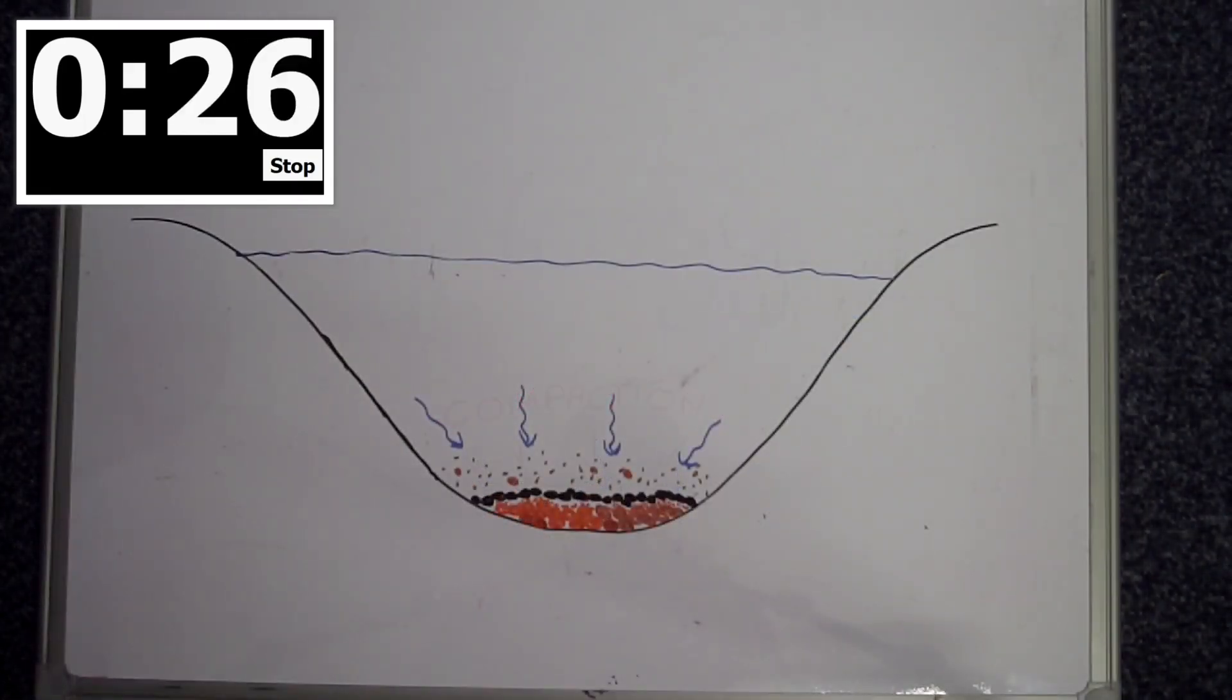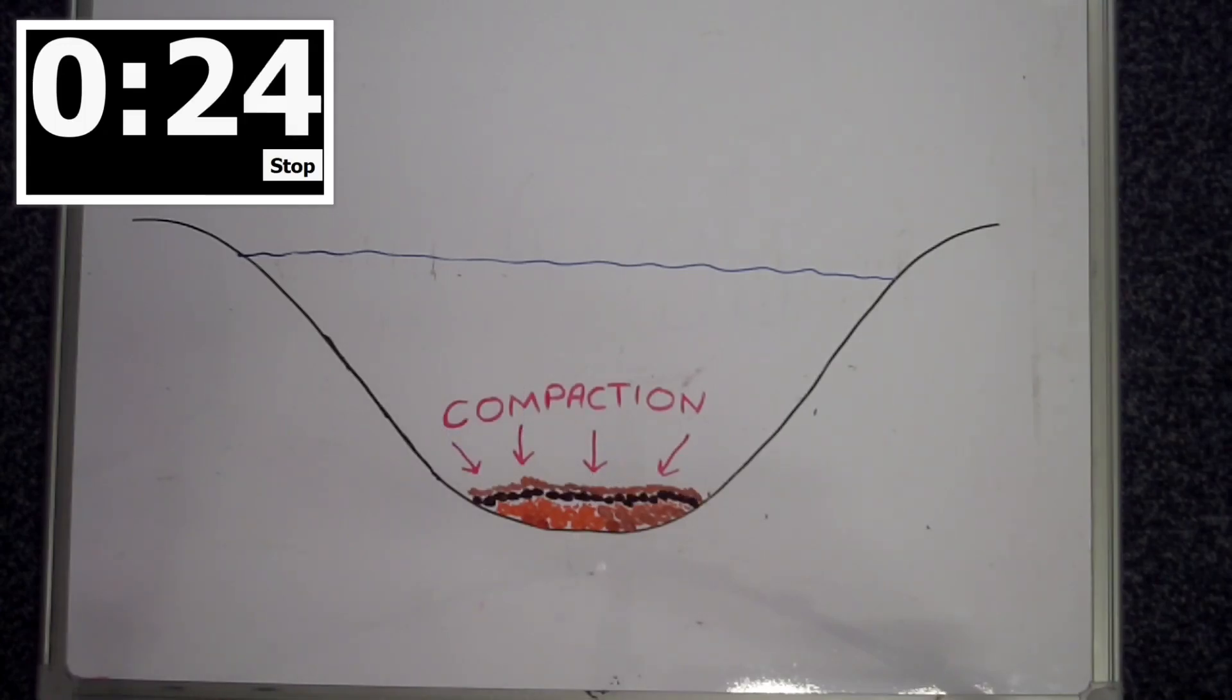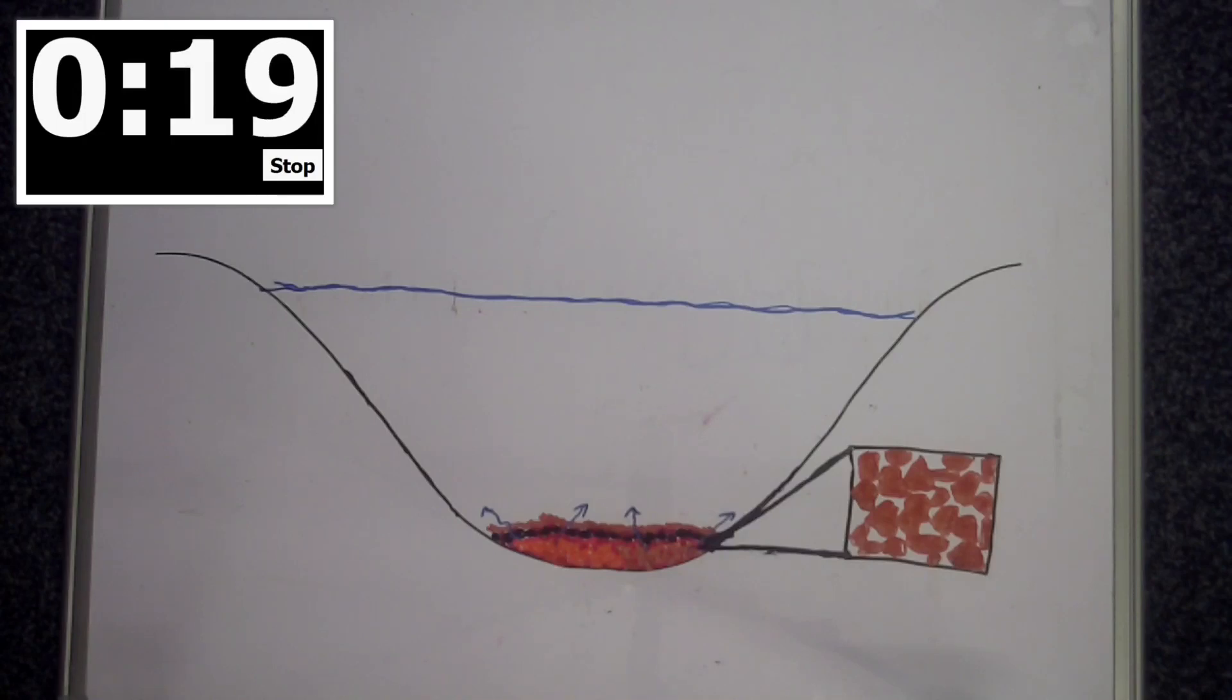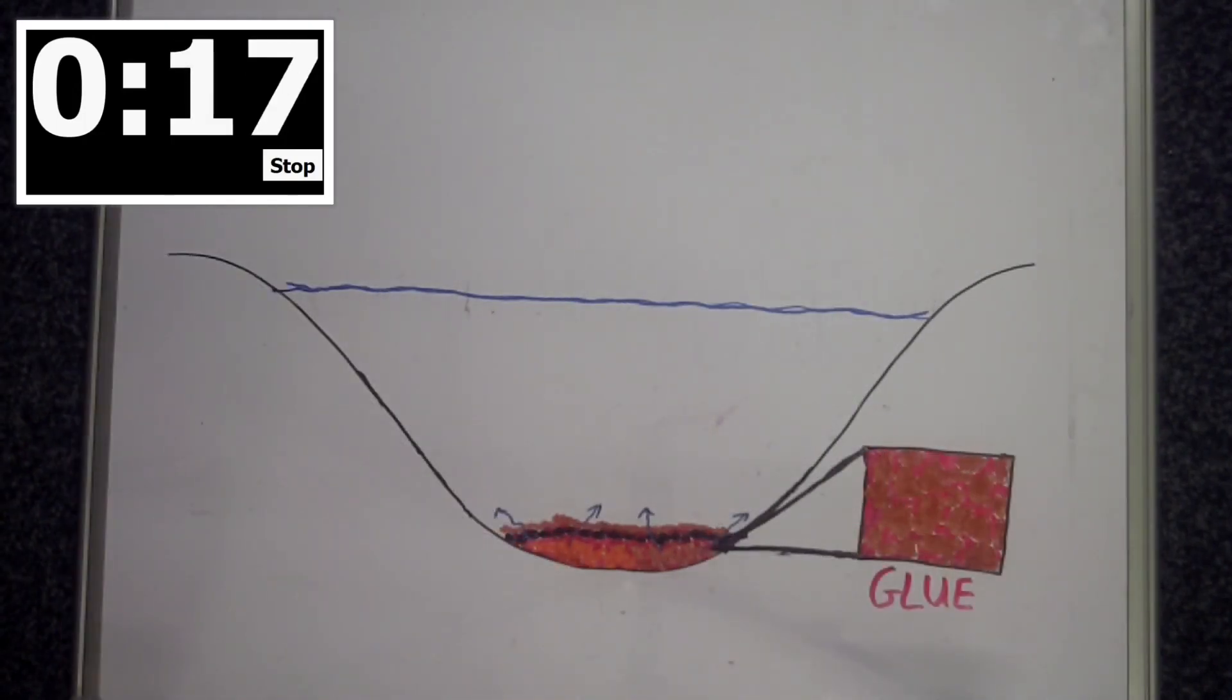The water is squeezed out from between the pieces of rock and crystals start to form. The crystals form a sort of glue or cement that stick all of the pieces of rock together. This process is called cementation.